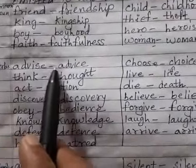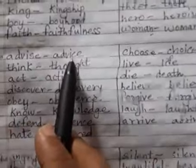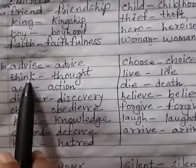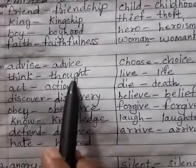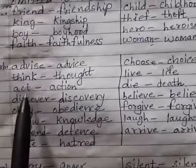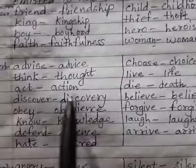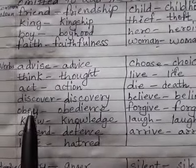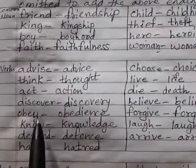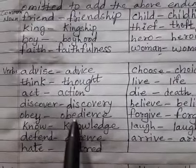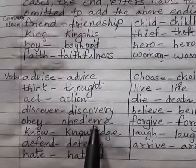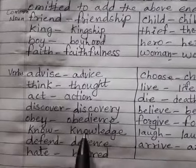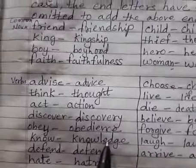Next are verbs. Advise → advice (replacing the S with C). Think → thought. Act → action. Discover → discovery. For obey → obedience, we remove the Y and add -dience. These are examples of verbs converted into abstract nouns.